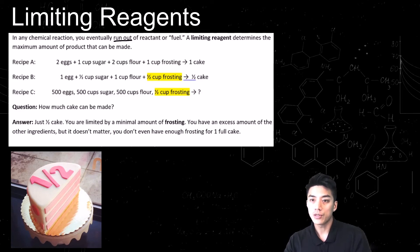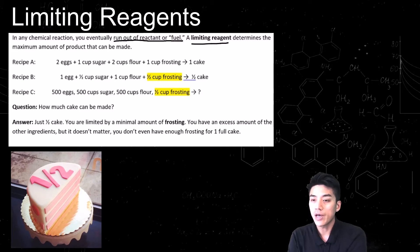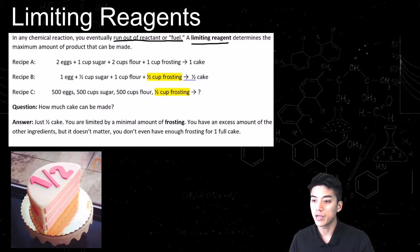We're now in part two. We're going to look at limiting reagents. In any chemical reaction, you eventually run out of reactant or fuel, and the reaction just comes to an end.